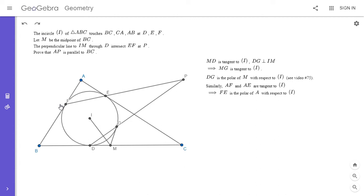So FE is the polar of A. And so P is the intersection of those two polars with respect to A and M. And so that means that AM is the polar of P. That's also from my video 75. So P is the intersection of those two polars. And so from video 75, and this is a consequence of Lahiri's theorem, AM is the polar of P with respect to the incircle.